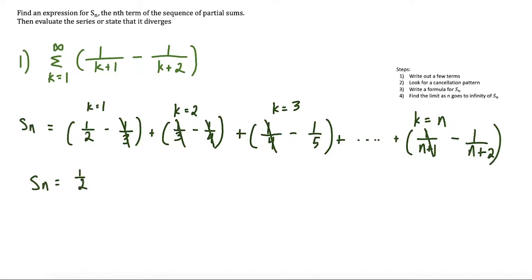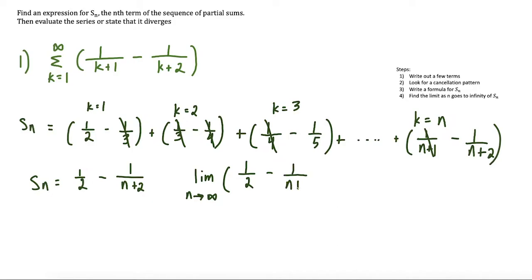The first term makes it all the way to the end. We have s(n) = 1/2 minus 1 over n plus 2. Now we have an expression for s of n, and we're going to use that to evaluate the series. The limit as n goes to infinity of 1/2 minus 1 over n plus 2 is simply equal to 1/2, because 1 over n plus 2 will go to 0. So this tells us that the series, evaluated from 1 to infinity, converges to a value of 1/2.